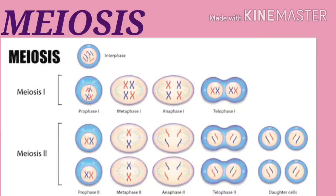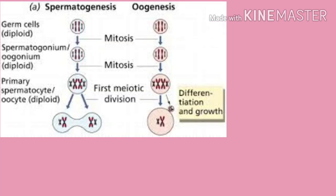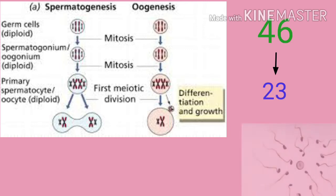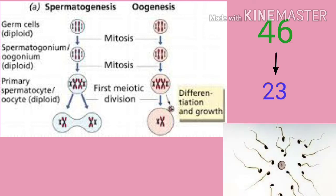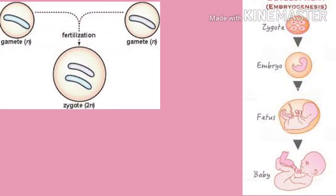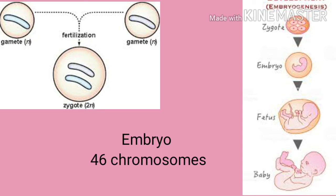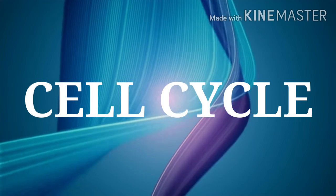The other type of cell division, meiosis, ensures that humans have the same number of chromosomes in each generation. It is a two-step process that reduces the chromosome number by half, from 46 to 23, to form sperm and egg cells. When the sperm and egg cells unite at conception, each contributes 23 chromosomes, so the resulting embryo will have the usual 46 chromosomes.